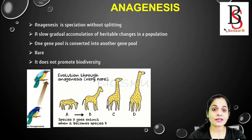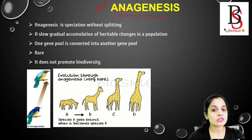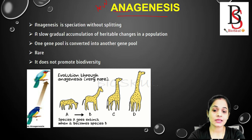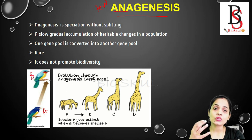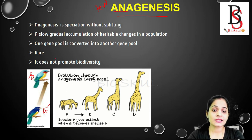Now let's focus on anagenesis in detail. Anagenesis is the formation of new species within a lineage — there is no splitting or branching. It takes place because of the gradual accumulation of hereditary changes in a population. For example, species A and species B exist in a single lineage; through gradual accumulation of changes over an evolutionary period, species A changes into species B. They look quite different from each other, as they are two different species and cannot interbreed.